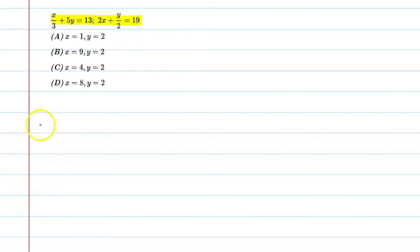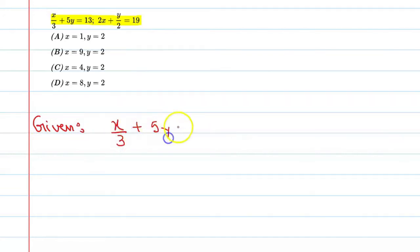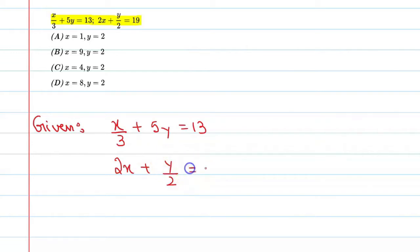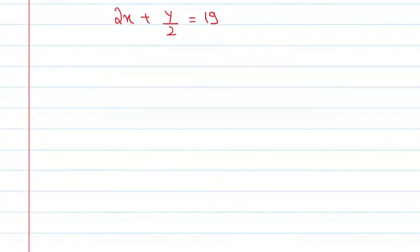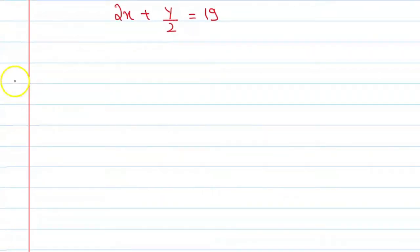First, we will write the given equations. The first equation is x upon 3 plus 5y equal to 30, and the second equation is 2x plus y upon 2, equal to 90. So first of all, we need to simplify these equations — that means we have to simplify the numbers in the denominator.